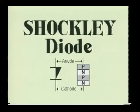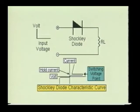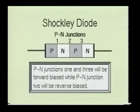Here we see the Shockley diode. It is constructed of four layers of semiconductor material. This device is commonly used in relaxation oscillator circuits and in triggering circuits for silicon-controlled rectifiers. The Shockley diode is basically a low-current SCR without a gate. The Shockley diode is turned on when the anode-to-cathode voltage is increased to the forward-switching voltage. The minimum current at which the Shockley diode will stay on is referred to as the hold current. When the current drops below this level, the diode will no longer conduct. Since the Shockley diode is a four-layer device, it will have three PN junctions — two of the junctions will be forward biased and the third will be reverse biased.